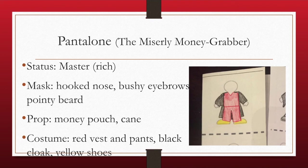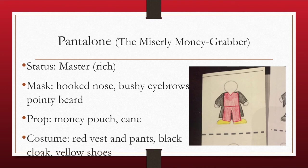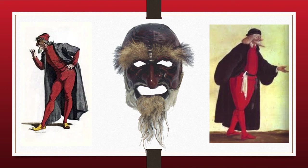Pantalone's status is that of a master — characters in Commedia dell'Arte are either masters or servants. Masters are usually rich or wealthy, which is why they have servants. He is a rich master. They all wear masks except for certain characters, and his mask had a hooked nose, bushy eyebrows, and a pointy beard. His props were a money pouch and a cane, and he kind of walked crouched over. Think of Scrooge as an example of Pantalone. His costume was a red vest, pants, black cloak, and yellow shoes.